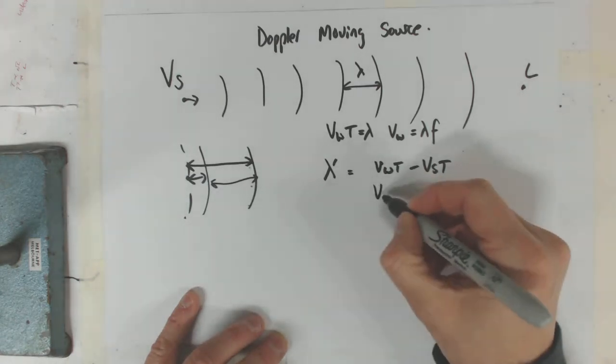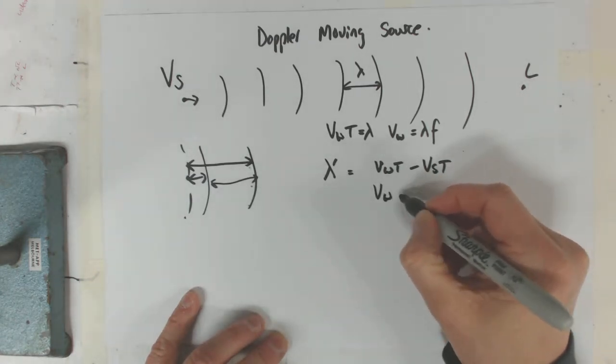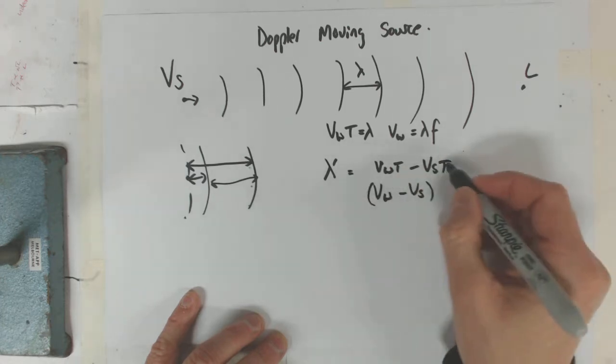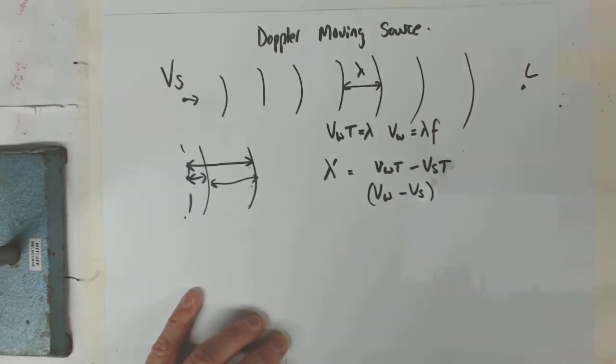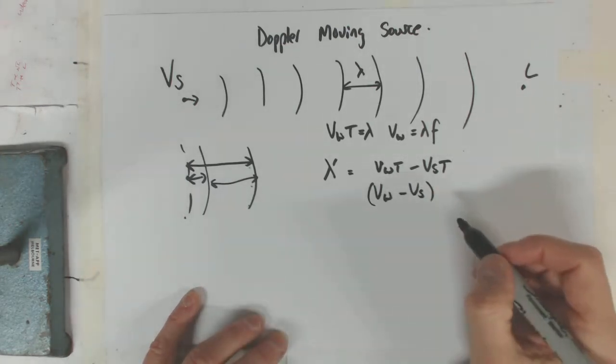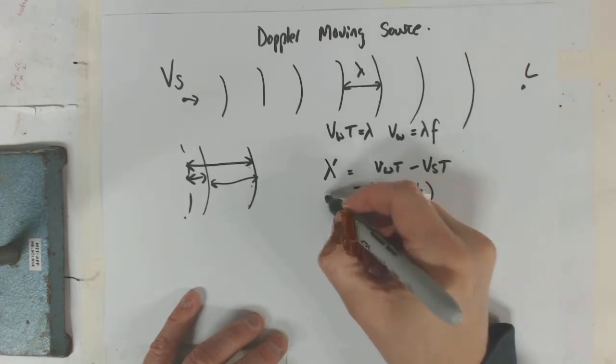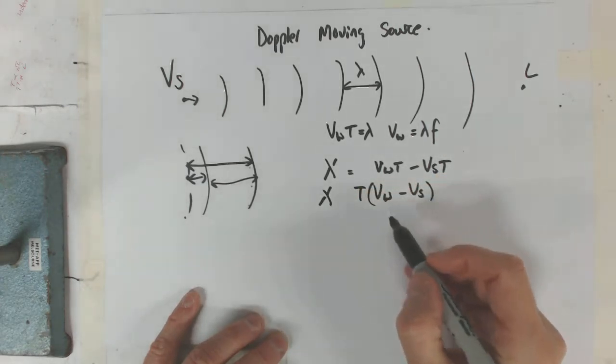But if we look at that, we can actually say that times T could be 1 over period, right? T, 1 over frequency, sorry. So that's T. Wavelength dash equals that. Now cancel F and just make it over F.